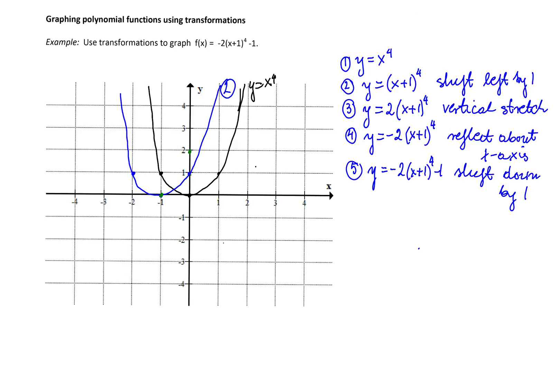Point (-2, 1) will be point (-2, 2). And the graph will be stretched vertically by a factor of 2. This is my third graph.